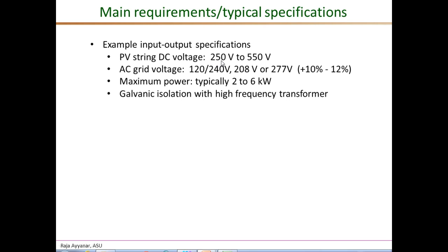Typically, this can be between 250 volts to about 550 volts. On the AC side, the PV inverters interface to the grid at either 120-240 volts. For example, in most residences in the US, the power is supplied through a three-wire 120-240 volt system, and the PV inverters connect directly to the 240 volt terminals.